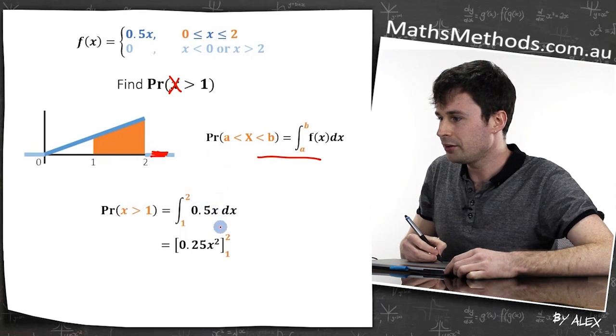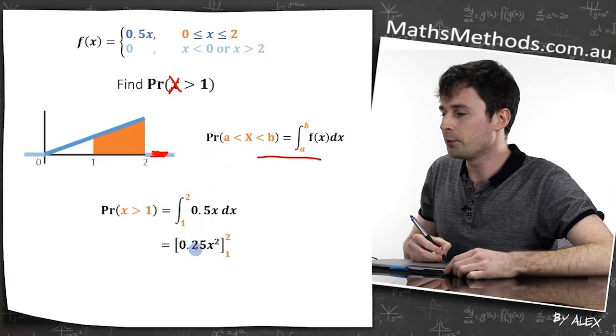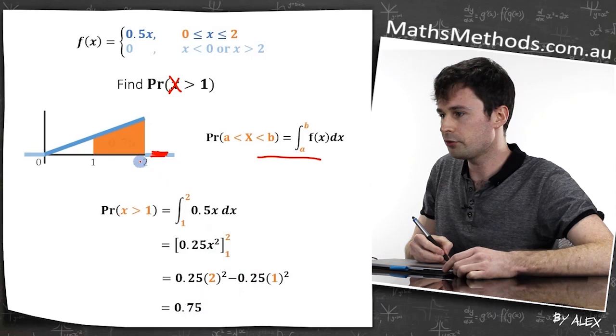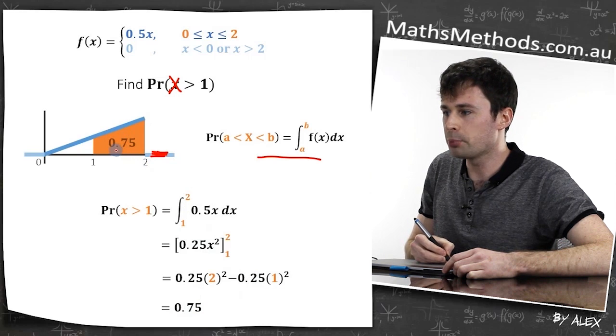The integration of this, x squared divided by two, gives us 0.25x squared. And then if we chuck this in our calculator, this will give us 0.75. So this area here is actually 0.75.